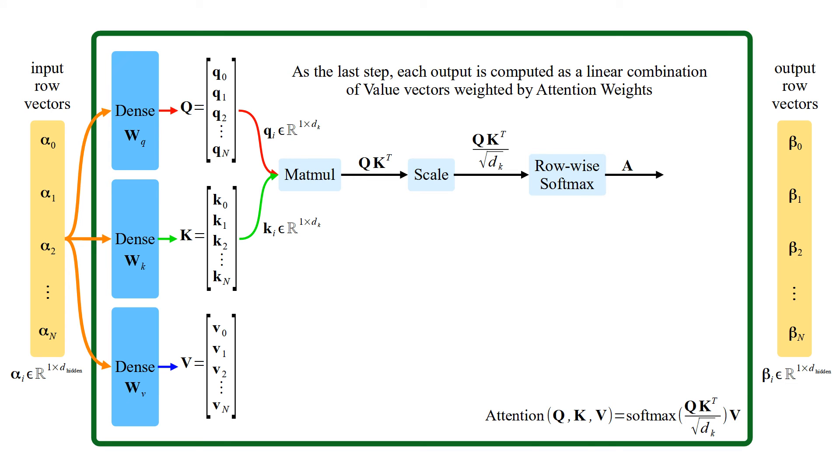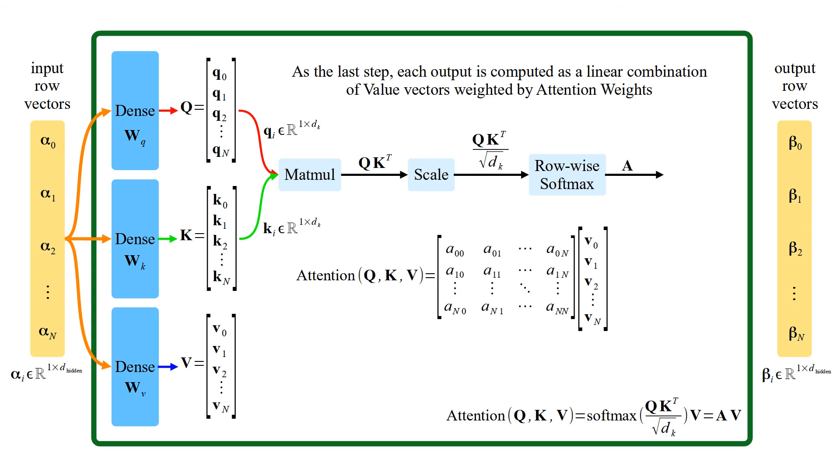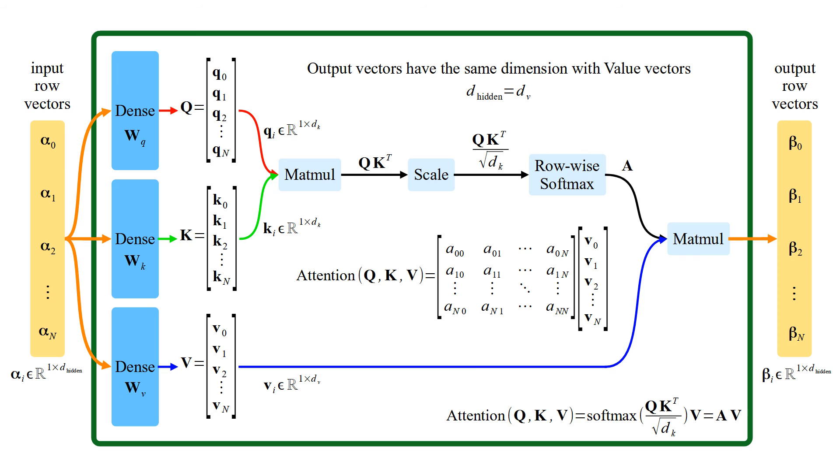As the last step, each output is computed as a linear combination of value vectors weighted by attention weights. Output vectors have the same dimension with value vectors.